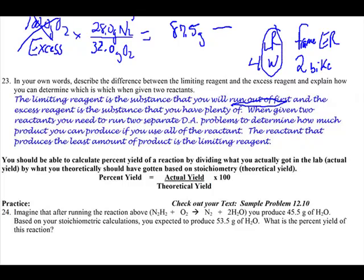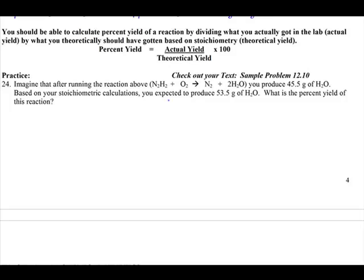Okay, percent yield. Percent yield is basically saying, we do all this stoichiometry, and we come up with these wonderful numbers, and this is, in theory, what we should make. This is what we should produce, what we should react, if everything was perfect.